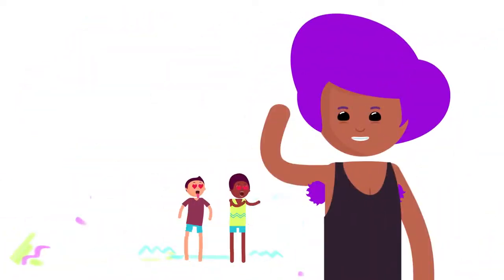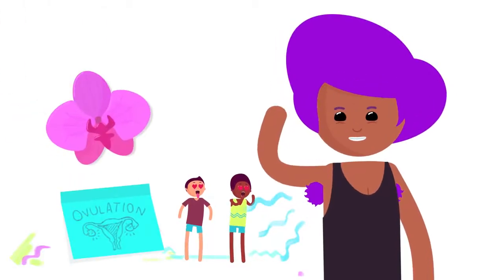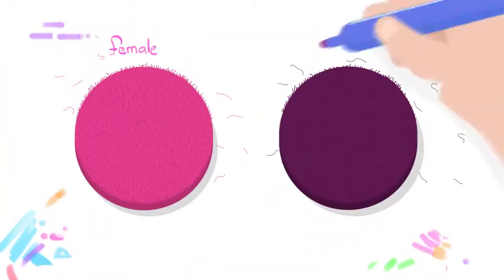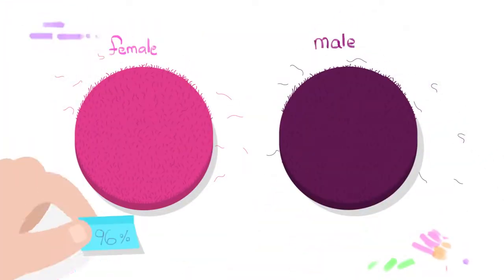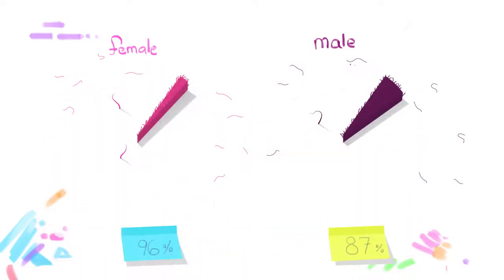This is further supported by the fact that women release different pheromones during ovulation, signaling fertility in order to become more attractive to others. But a study of over 1,000 students in America found that 96% of females and 87% of males had either partially or completely removed pubic hair within the past month.